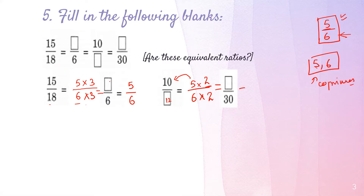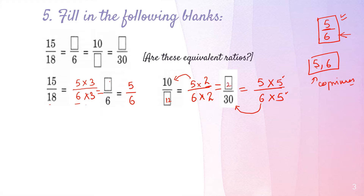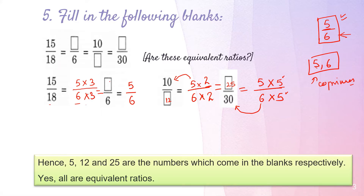For the final blank — blank upon 30 — I take my lowest form 5 upon 6 and ask: how many times is 6 in 30? Six times 5 is 30, so I multiply both numerator and denominator by 5. The numerator becomes 5 times 5, which is 25. So the blanks are 5, 12, and 25 respectively.